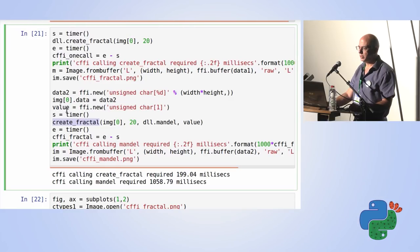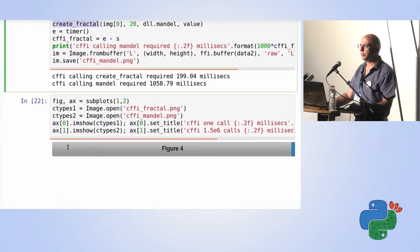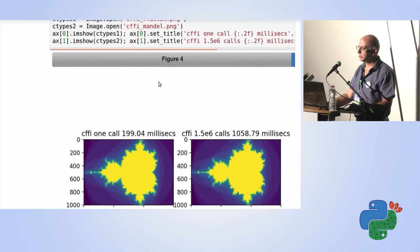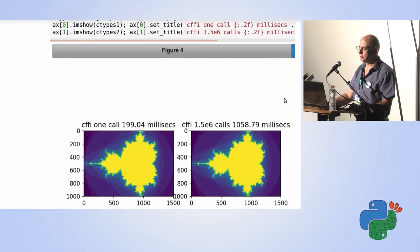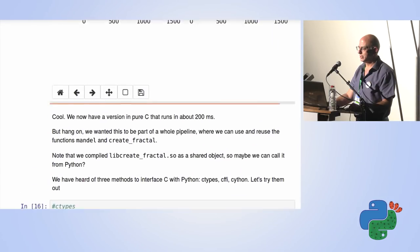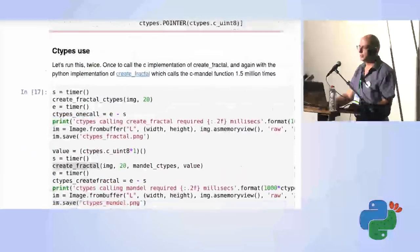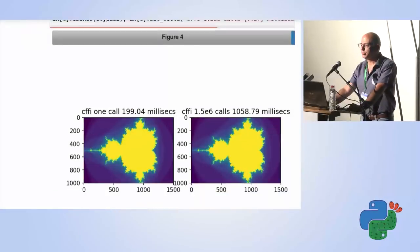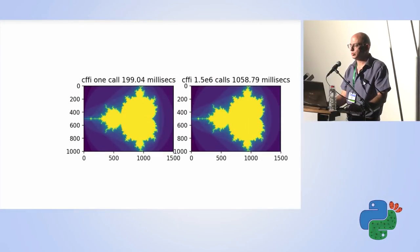CFFI calling the C create_fractal required about 200 milliseconds. But calling mandl 1.5 million times is a bit faster than C-types. We verify that CFFI produced the same correct images. Now let's move on to Cython.